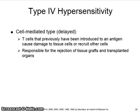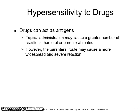Type 4 hypersensitivity is a cell-mediated immune response, also called delayed hypersensitivity. T cells that have previously been introduced to an antigen cause damage to tissue cells or recruit other cells. This type of hypersensitivity is responsible for the rejection of tissue grafts and transplanted organs. Drugs can also act as antigens. Topical administration may cause a greater number of reactions than oral or parenteral routes; however, the parenteral route may cause a more widespread and even more severe reaction. Patients with multiple allergies or autoimmune diseases are more likely to have allergic reactions to drugs.